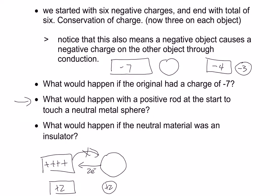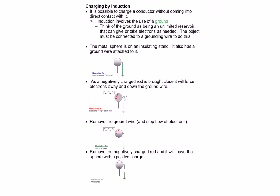The last conduction case: what if the neutral material is an insulator? If we had our negative seven rod and touch it against a rubber ball instead of a metal ball, since rubber is an insulator, nothing happens. We touch them together, move apart, and it stays at negative seven and zero. Conduction is simple — just remember you're balancing charges, and the total charge is conserved; it just shifts from one object to the other.